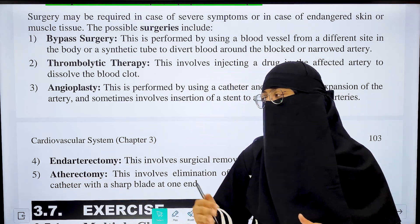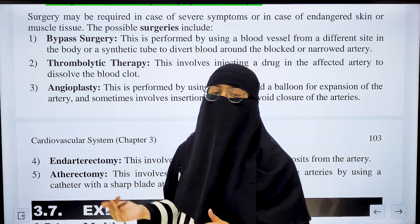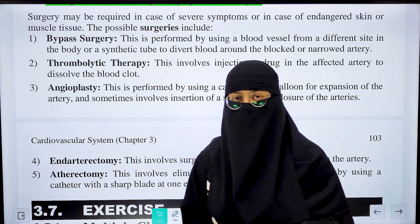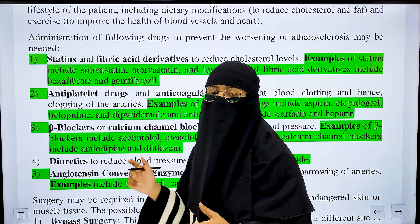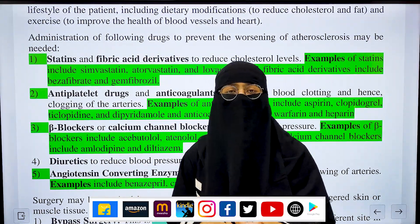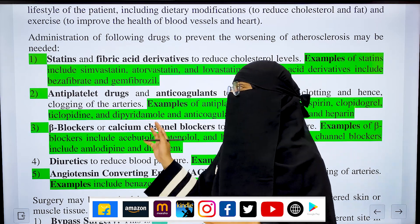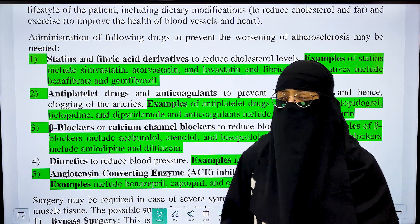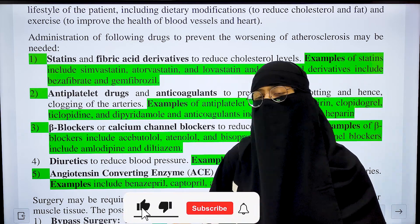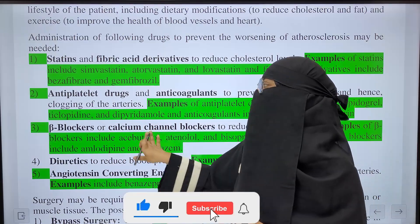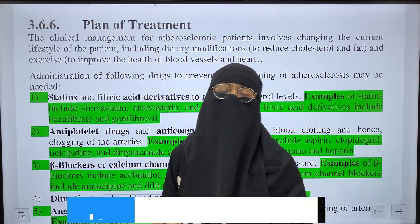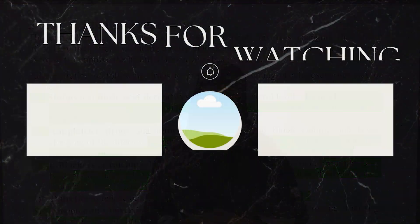In this lecture, we have seen three diseases: angina pectoris, myocardial infarction, and atherosclerosis or arteriosclerosis. We have learned about their signs and symptoms, causes, and pathogenesis. If you liked this lecture, please like, comment, share, and subscribe. Thank you.